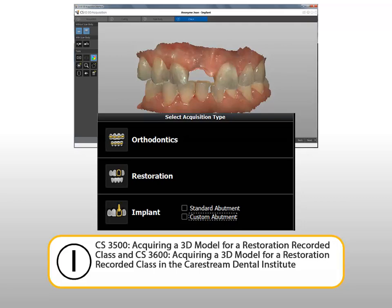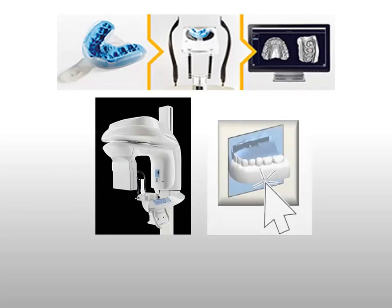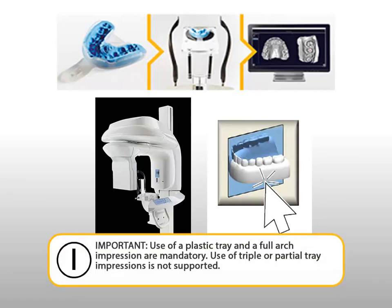You can also acquire a 3D model from a conventional impression — silicon or alginate — obtained using a CareStream Dental CBCT unit and the 3D object acquisition module. Use of a plastic tray and a full arch impression are mandatory. Use of triple or partial tray impressions is not supported.